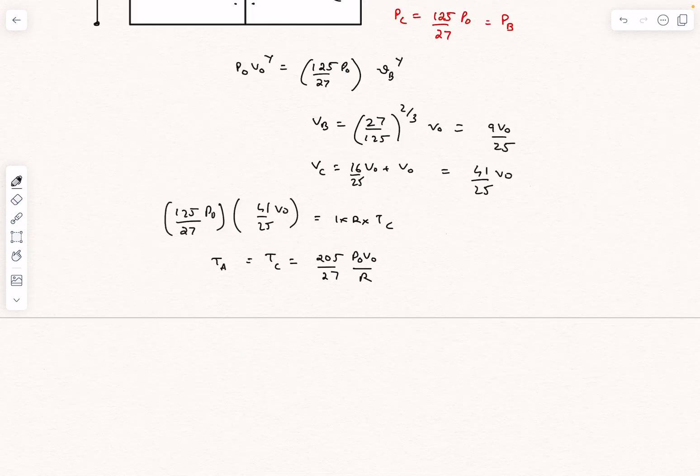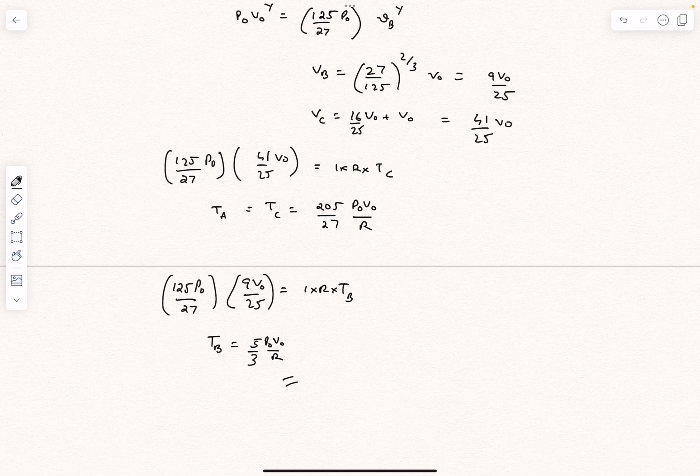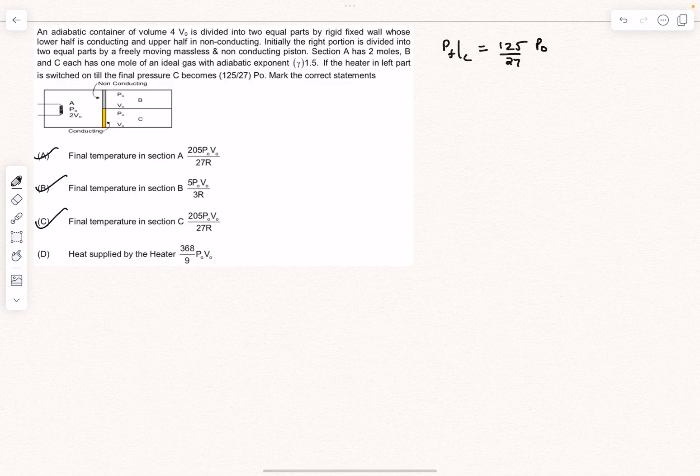For section B, we can again use PB equals NRT. After solving, the temperature in section B comes out to be 5 by 3 P₀V₀ by R, which matches with option B as well.